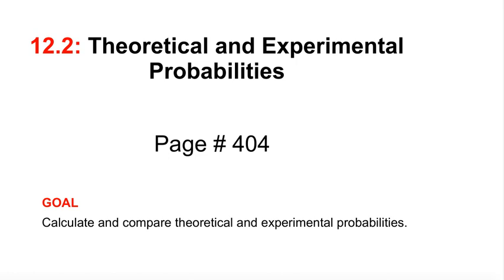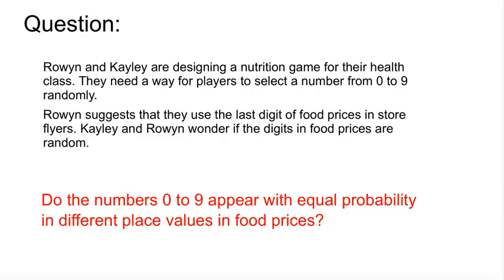All right, hello grade 8s and welcome to lesson 12.2, Theoretical and Experimental Probabilities, found conveniently on page 404 of your textbooks. And the goal, which you will write down in your notes, is to calculate and compare theoretical and experimental probabilities.